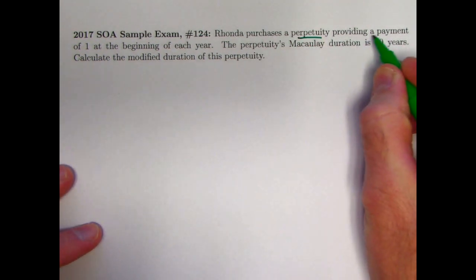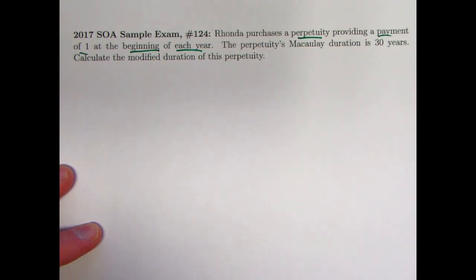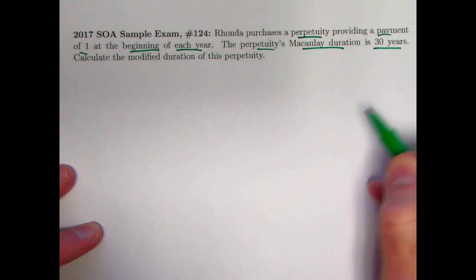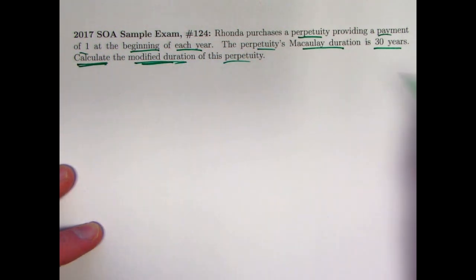Rhonda purchases a perpetuity providing a payment of 1 at the beginning of each year, forever. Perpetuities are forever. This is at the beginning of each year, so it's a perpetuity due. The perpetuity's Macaulay duration is 30 years. We want to calculate the modified duration of this perpetuity.